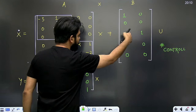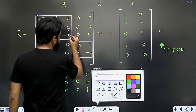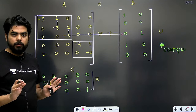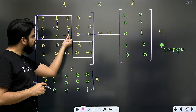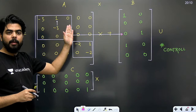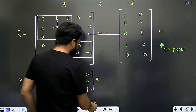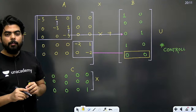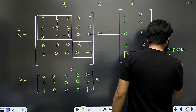अगर इसके last row के सामने वाले elements को आप check करोगे तो देखो आपको क्या दिख रहा है - 0 और 1। अगर आपको 0 और 1 दिख रहा है, तो बस यह judge करो कि क्या यह दोनों elements 0 थे या नहीं। दोनों elements 0 नहीं थे। दूसरे Jordan block के सामने जाओ तो देखो सारे elements 0 आ गए। इसका मतलब यह matrix हो गई uncontrollable।